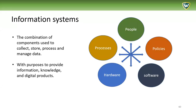Information systems are the combination of components used to collect, store, process, and manage data, with the purpose of providing information, knowledge, and digital products. Often information systems are identified with the following components: they're about people, processes, behaviors, or procedures, policies and regulations, and hardware and software. So we have both a human component and a technology component, as well as a behavioral component and a legal or policy level component.